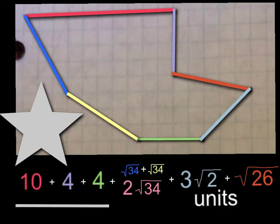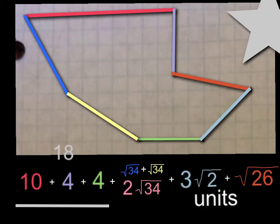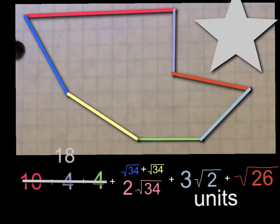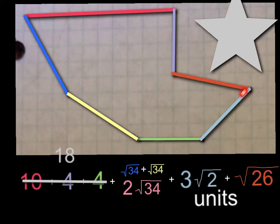Now that we have found all the side lengths, we are going to add them all up. The red side has 10 units, plus the violet side which has 4 units, plus the green side which also has 4 units — these add up to 18 units. Next, the blue side plus the yellow side are both square roots of 34, so square root of 34 plus square root of 34 equals 2 square roots of 34. Then the light blue side is 3 square roots of 2, plus the orange side, the square root of 26.